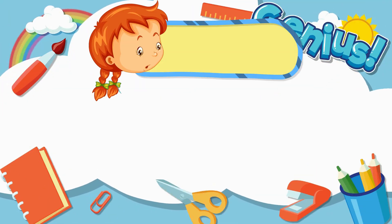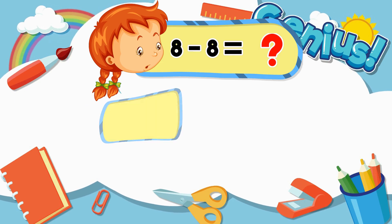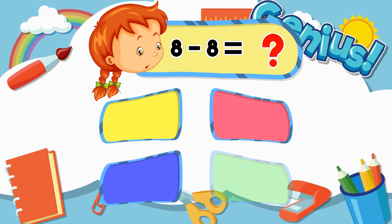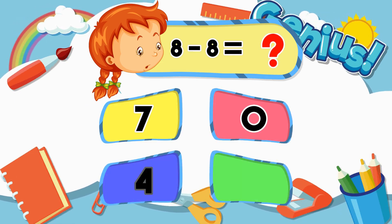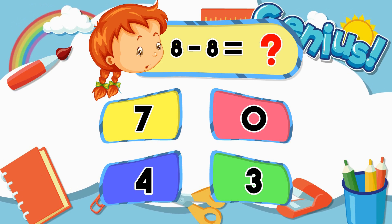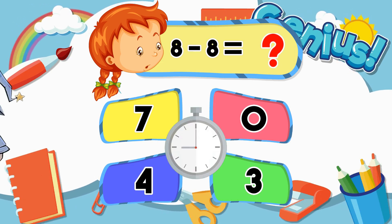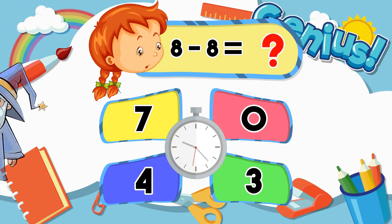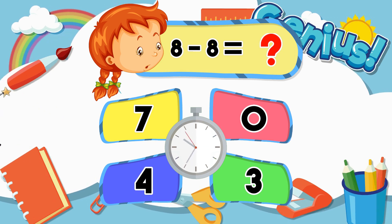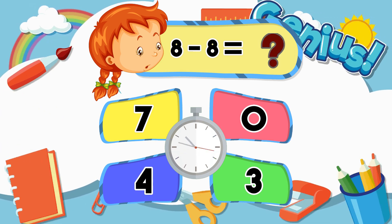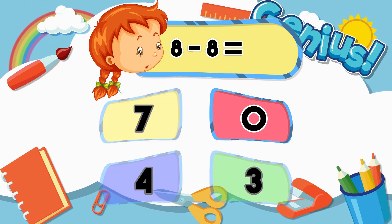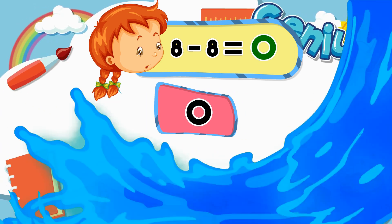What is 8 minus 8? 7, 0, 4, 3. The correct answer is 0.